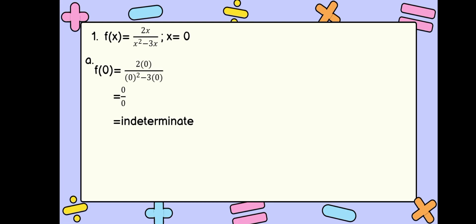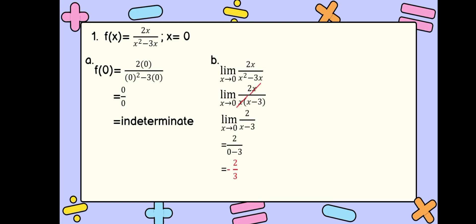We are still going to check for the limits of our function. The limit of 2x over x squared minus 3x as x approaches 0. We can factor x squared minus 3x, which gives us the limit of 2x over x times the quantity x minus 3 as x approaches 0. We can cancel out x, leaving us with the limit of 2 over x minus 3 as x approaches 0. Substituting 0 gives us 2 over 0 minus 3, which is negative 2 thirds.